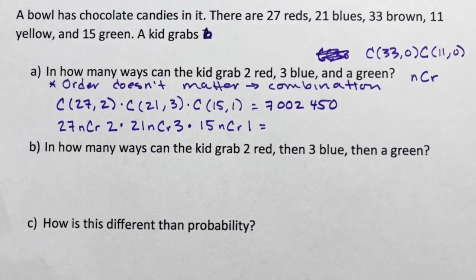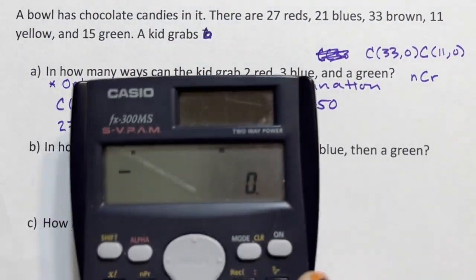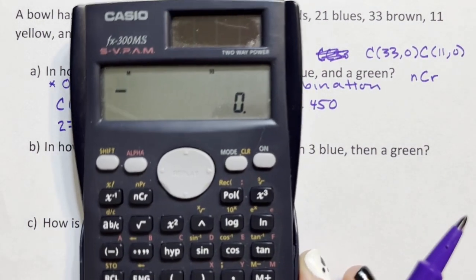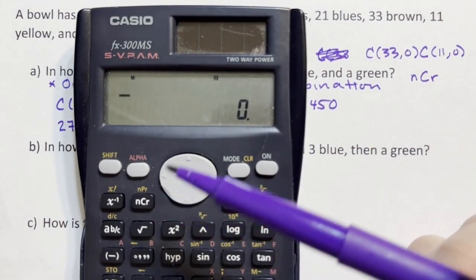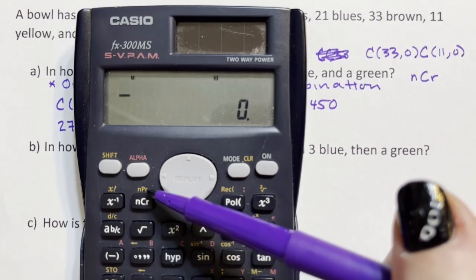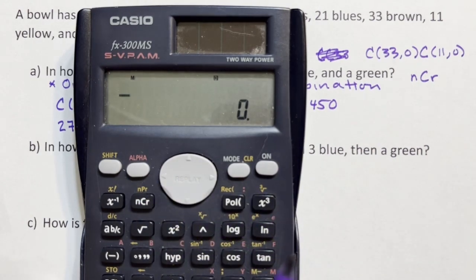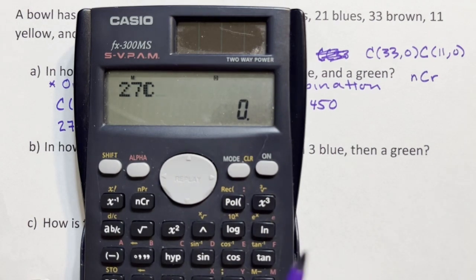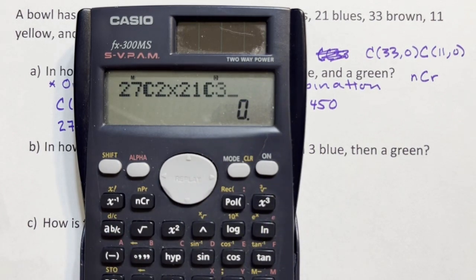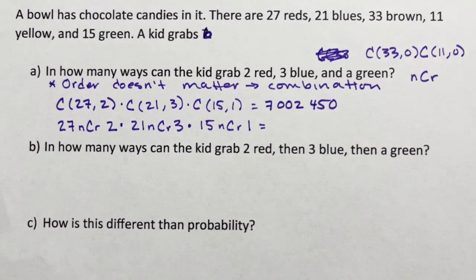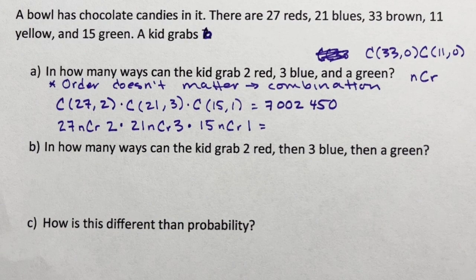If you have this Casio, this is the easiest. This one has ncr and npr right here. For this one I just literally do 27 ncr 2, and notice it just shows the C, times 21 ncr 3 times 15 ncr 1.